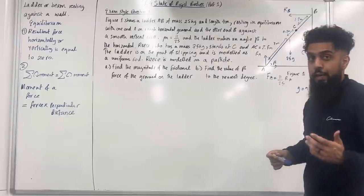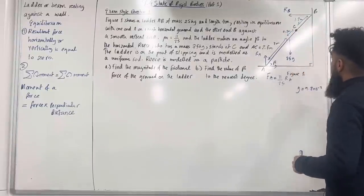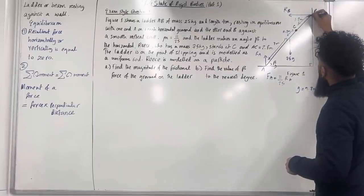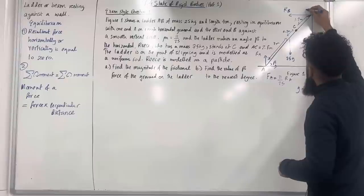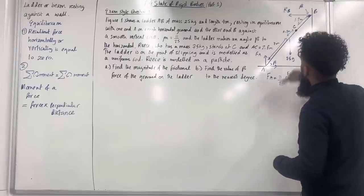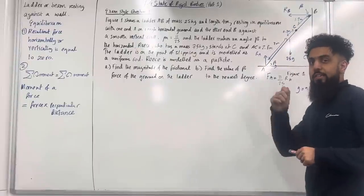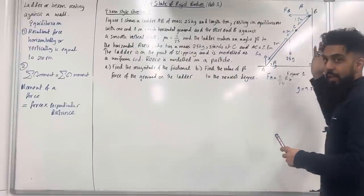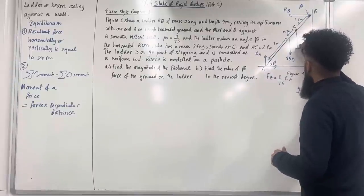We have alternate angles — there's a Z-shape so this angle here will also be beta; alternate angles are equal. We are also told that Reese has a mass of 75 kg and stands at point C, so we can label that weight as 75g.